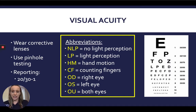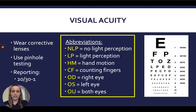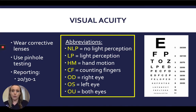The next vital sign is visual acuity. We have an eye chart on the wall in the emergency department, but you can also use a pocket eye chart. If the patient normally wears corrective lenses, have them put on their glasses before testing. If glasses aren't available, use pinhole testing instead. When reporting visual acuity, if the patient reached the 20/30 line but got one letter wrong, you would report it as 20/30 minus one.